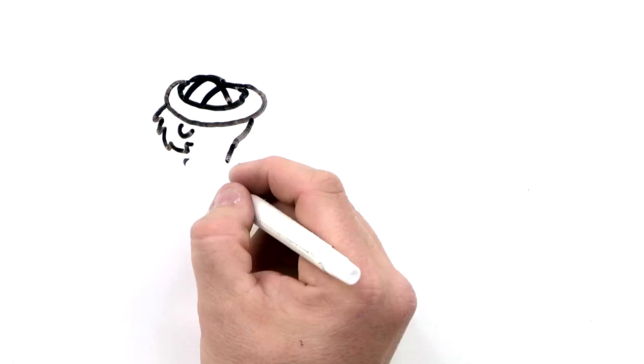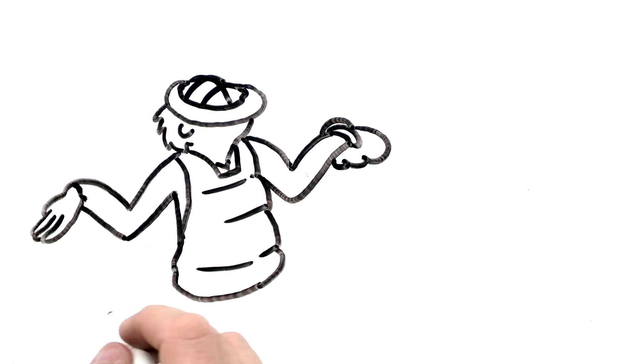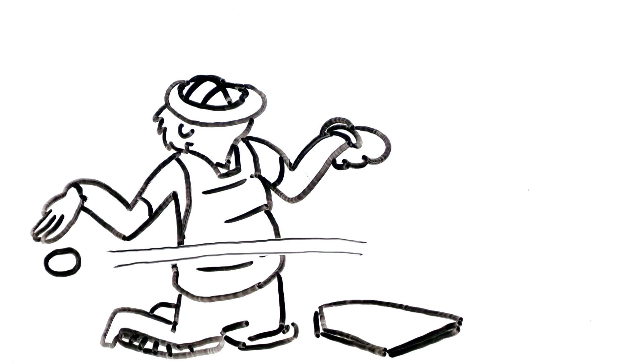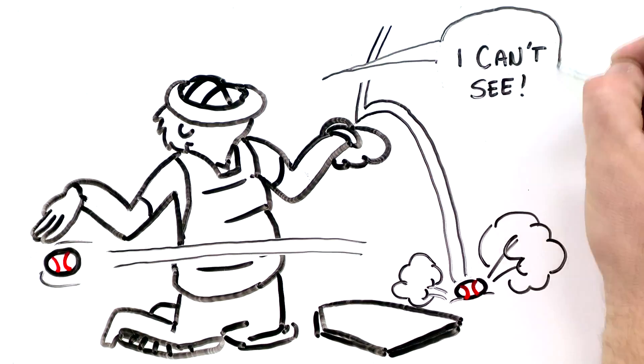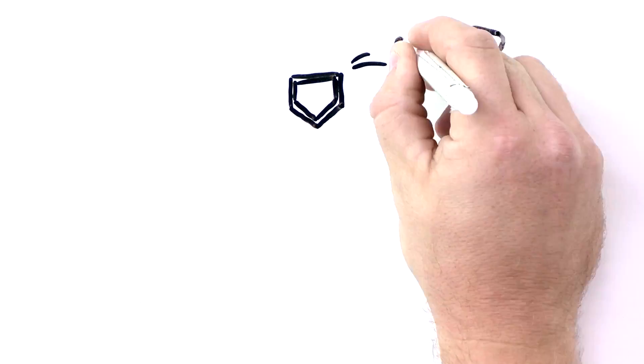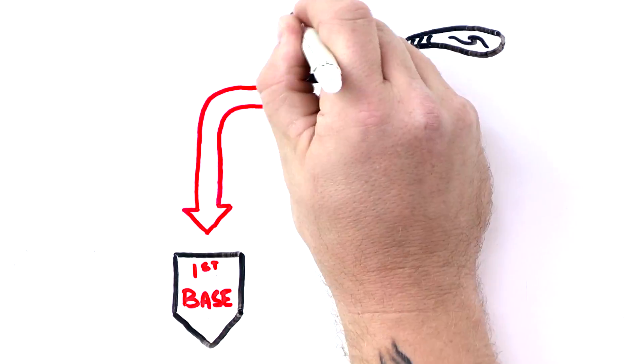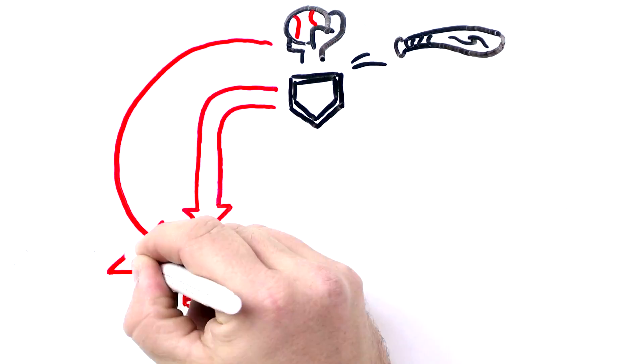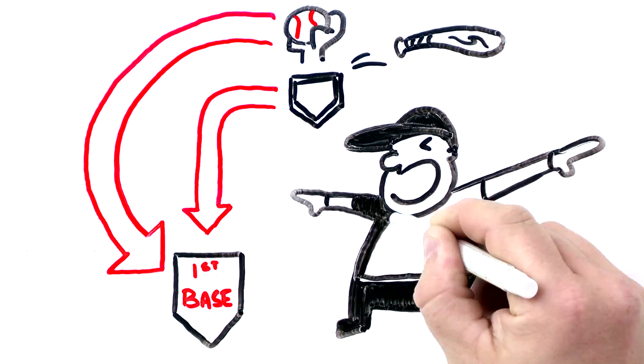And get this, if the catcher doesn't catch the third strike, if it goes past them or they lose it out of their glove, then the batter becomes a runner and can try to get to first base before the catcher finds the ball and throws it to the first baseman. Then he's safe even though he struck out.